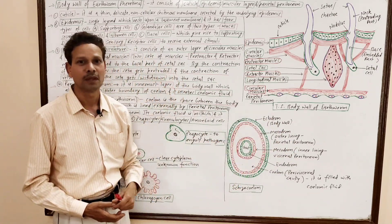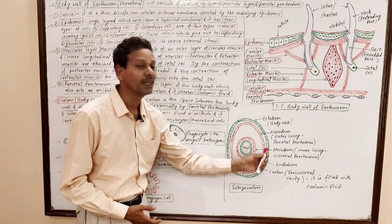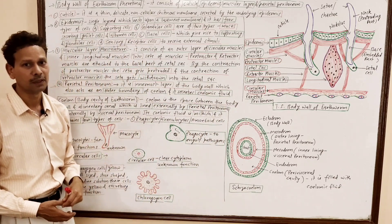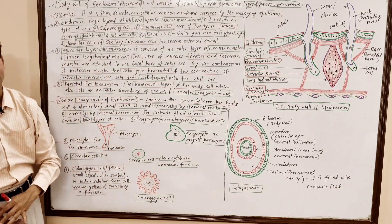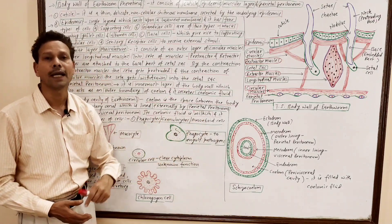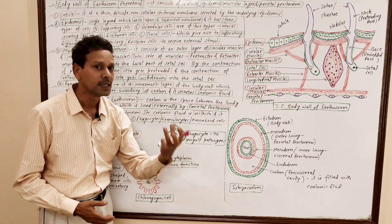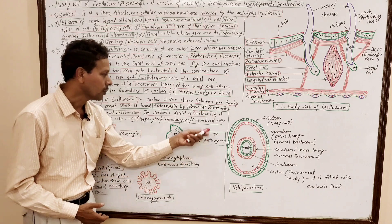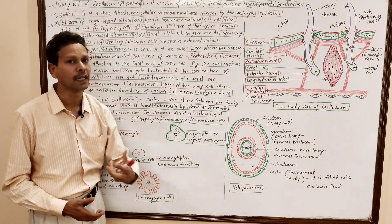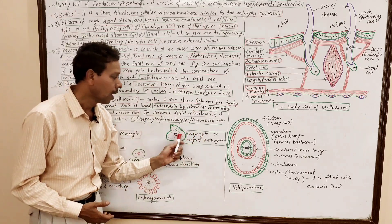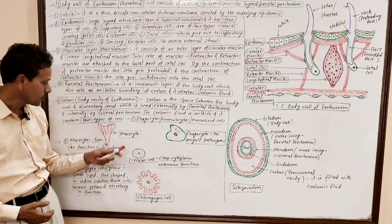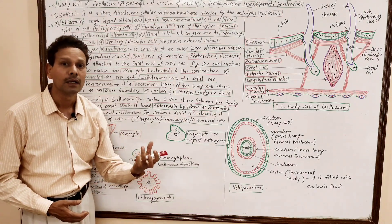This coelom — the perivisceral cavity — is filled with coelomic fluid which is milkish in nature. The coelomic fluid consists of four types of cells, called corpuscle cells. The first type of cells are phagocytes — these are amoebocytes, amoeboid cells, or granulocytes, as granules are present in them. Their shape and activities are like amoeba cells; they are amoeboid and phagocytic, engulfing harmful pathogens. The second type of cells are mucocytes, which are fan-shaped, and their functions are unknown.